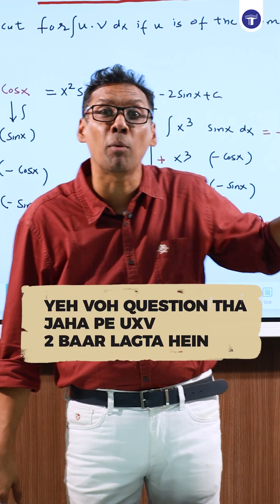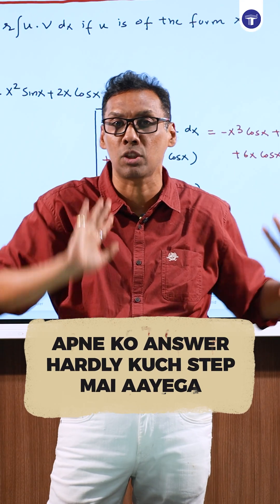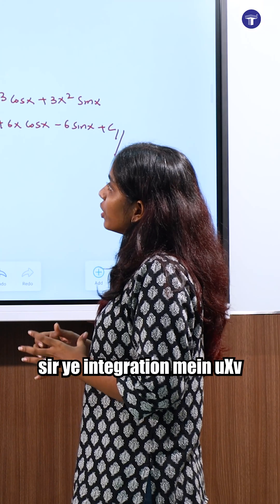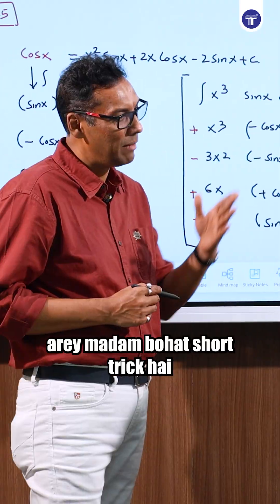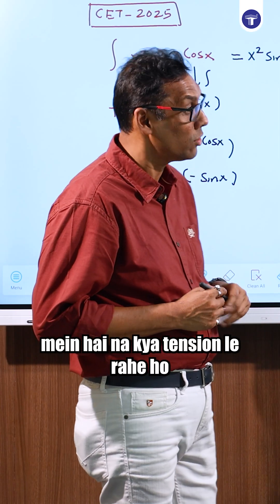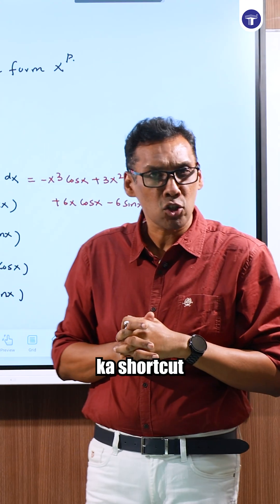This is a question about UV integration. Is there any short trick for this? I have a short trick for you. Look, U into V has a shortcut method.